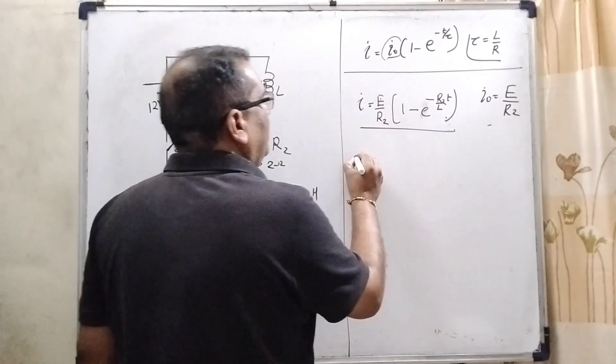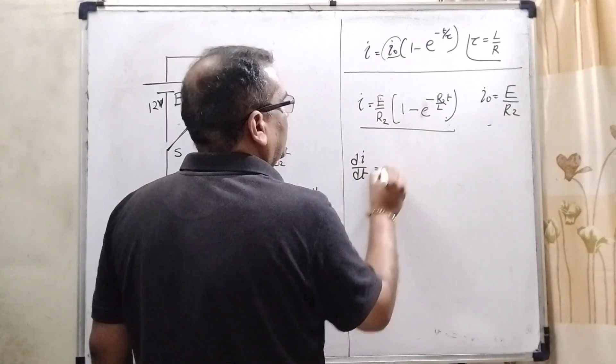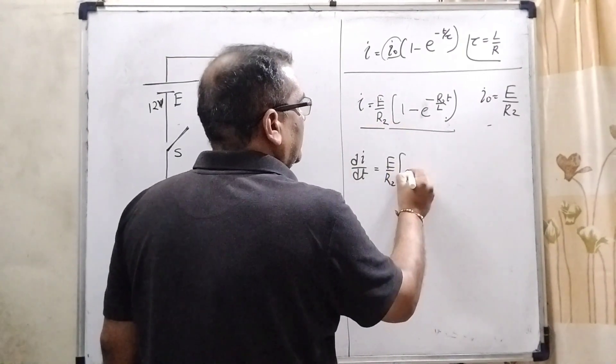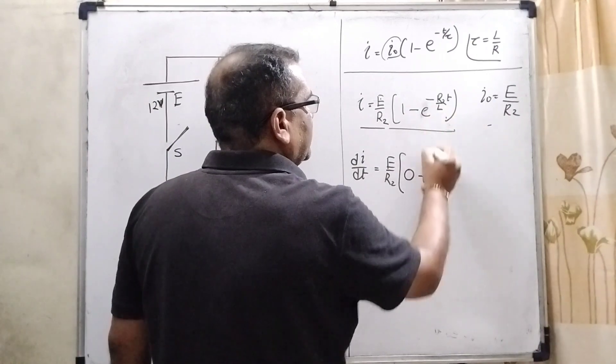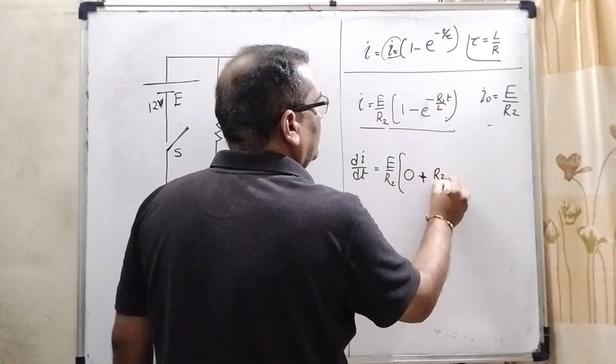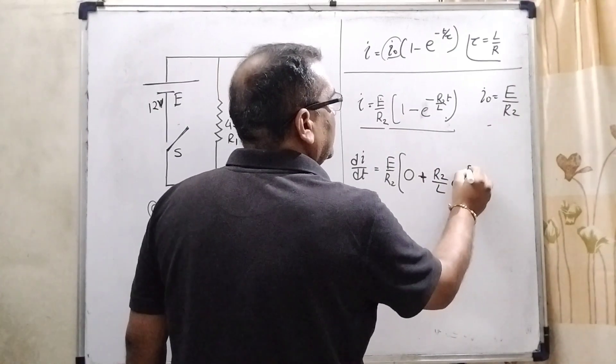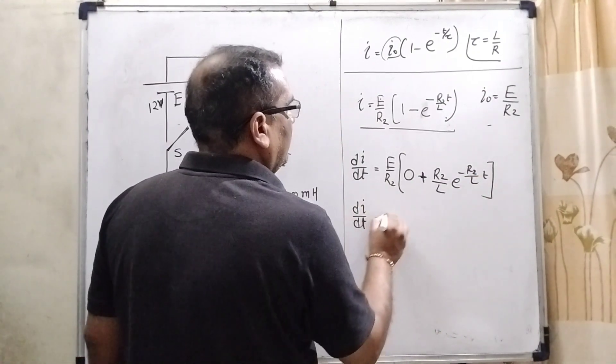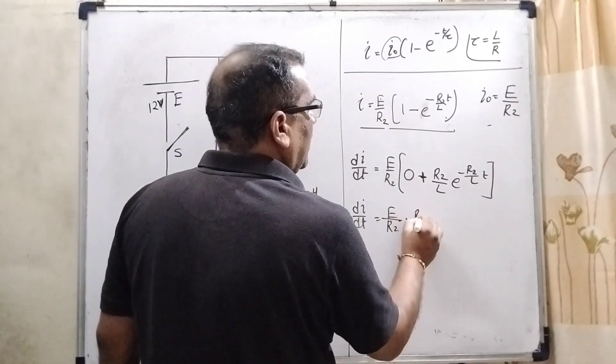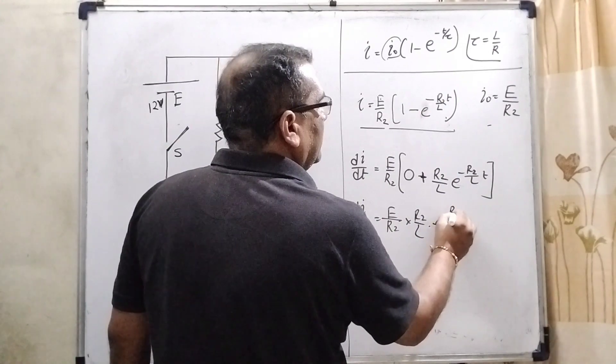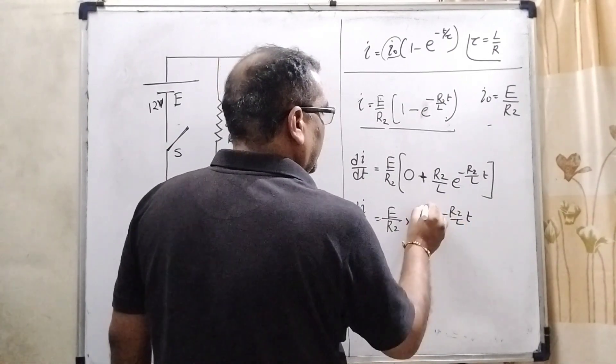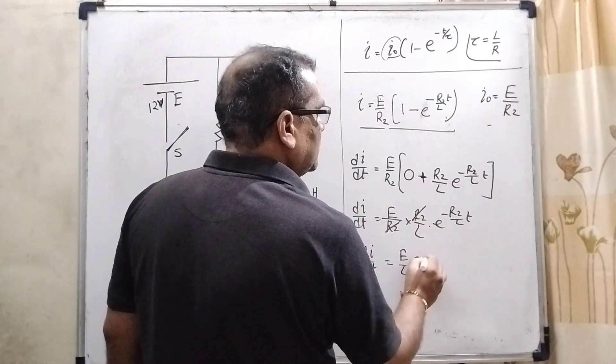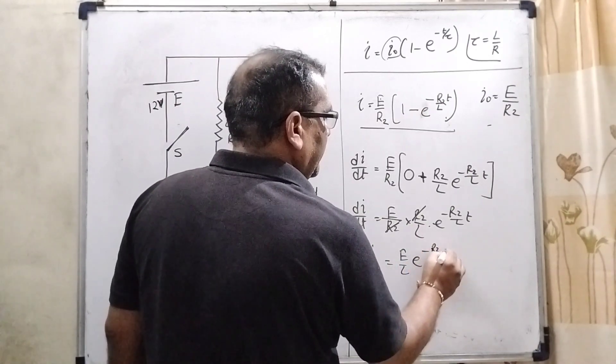Now differentiate with respect to time, then dI by dT equal to E by R2 in bracket. 1 becomes 0, minus minus plus. Coefficient comes forward as R2 by L, and again E raised to power minus R2 by L into T. So dI by dT equal to E by R2 into R2 by L, E raised to power minus R2 by L into T. Here R2, R2 cancel out, then dI by dT equal to E by L, E raised to power minus R2 by L into T.